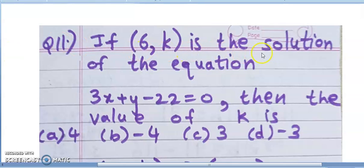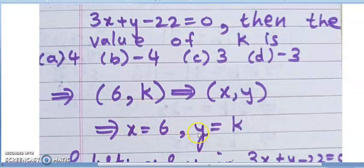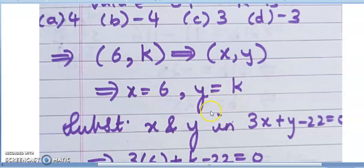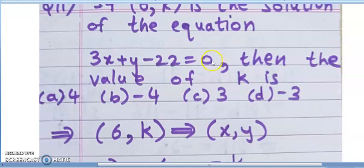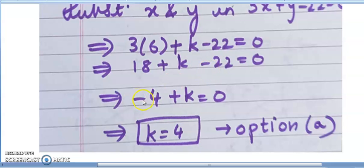Next question: if (6, k) is the solution of the equation 3x + y - 22 = 0, find the value of k. The point (6, k) is of the form (x, y), so x = 6 and y = k. Substituting: 3(6) + k - 22 = 0 → 18 + k - 22 = 0 → k - 4 = 0 → k = 4, which is option A.